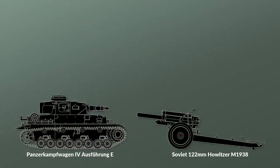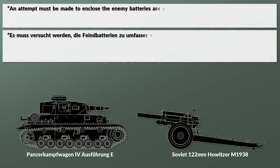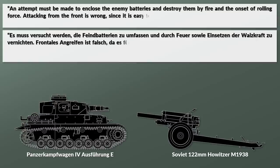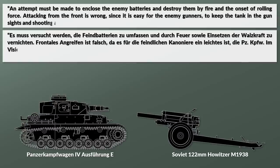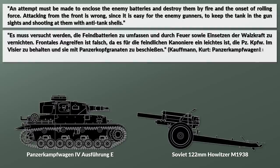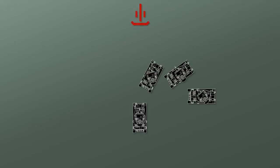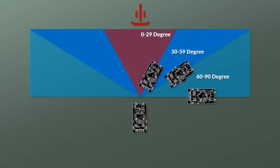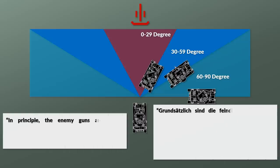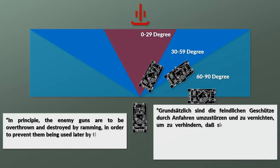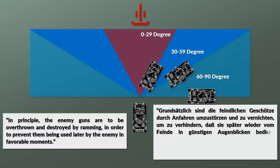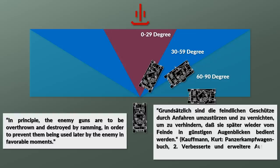An attempt must be made to enclose enemy batteries and destroy them by fire and the onset of rolling force. Attacking from the front is wrong, since it is easy for the enemy gunners to keep the tank in the gun sights and shoot at them with anti-tank shells. As such, it is recommended to move diagonally or even laterally to the enemy artillery, as shown here with a degree range from around 90 to 30 degrees. Furthermore, the speed and direction should be changed regularly to prevent the enemy from properly leading his aim. In principle, the enemy guns are to be overthrown and destroyed by ramming, in order to prevent them from being used later by the enemy in favorable moments.